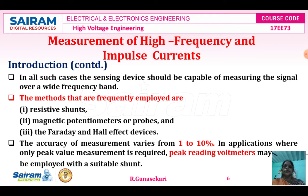The accuracy of measurement varies from 1 to 10 percentage. In applications where only the peak value measurement is required, peak reading voltmeters may be employed with a suitable shunt. The peak reading voltmeter was already studied in the generation of high voltage and currents in module 2.